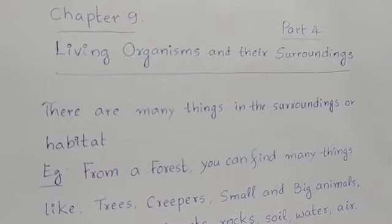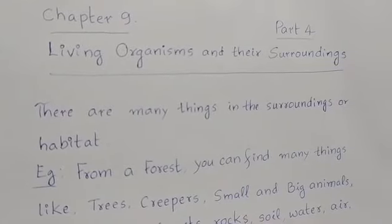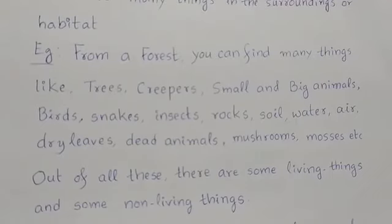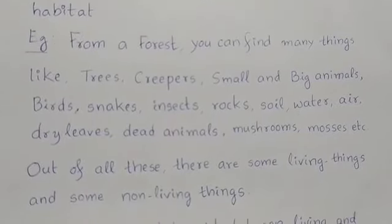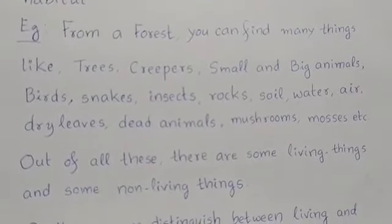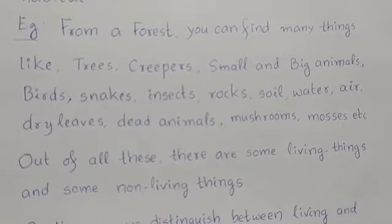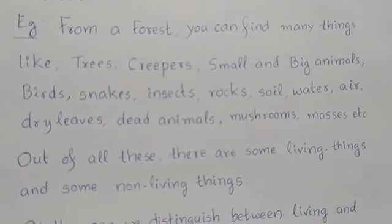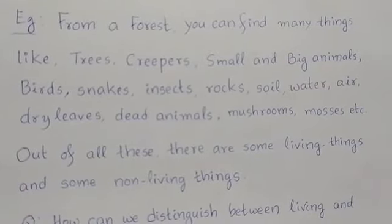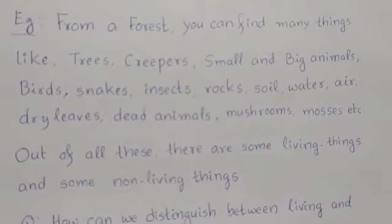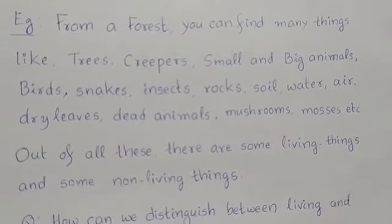There are many things in the surroundings or in the habitat of living organisms. If you take a forest, you can find many things like trees, creepers, small and big animals, birds, snakes, insects, rocks, soil, water, air, dry leaves, dead animals, mushrooms, mosses, etc. Out of all these things, if we carefully observe, some are living things and some are non-living things.